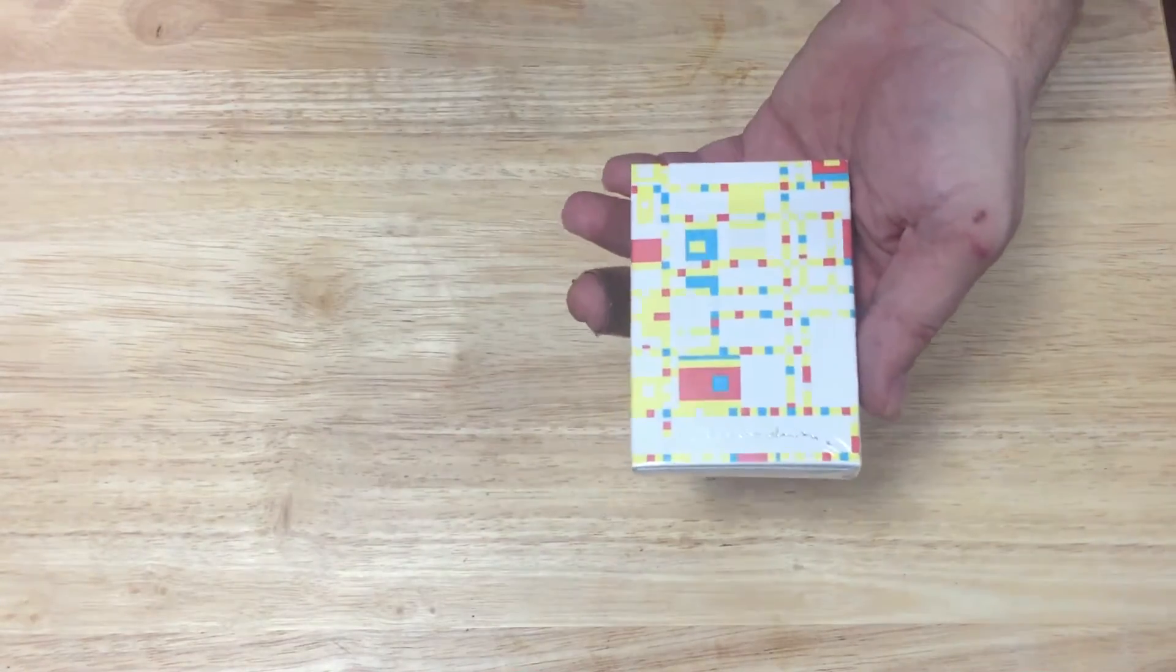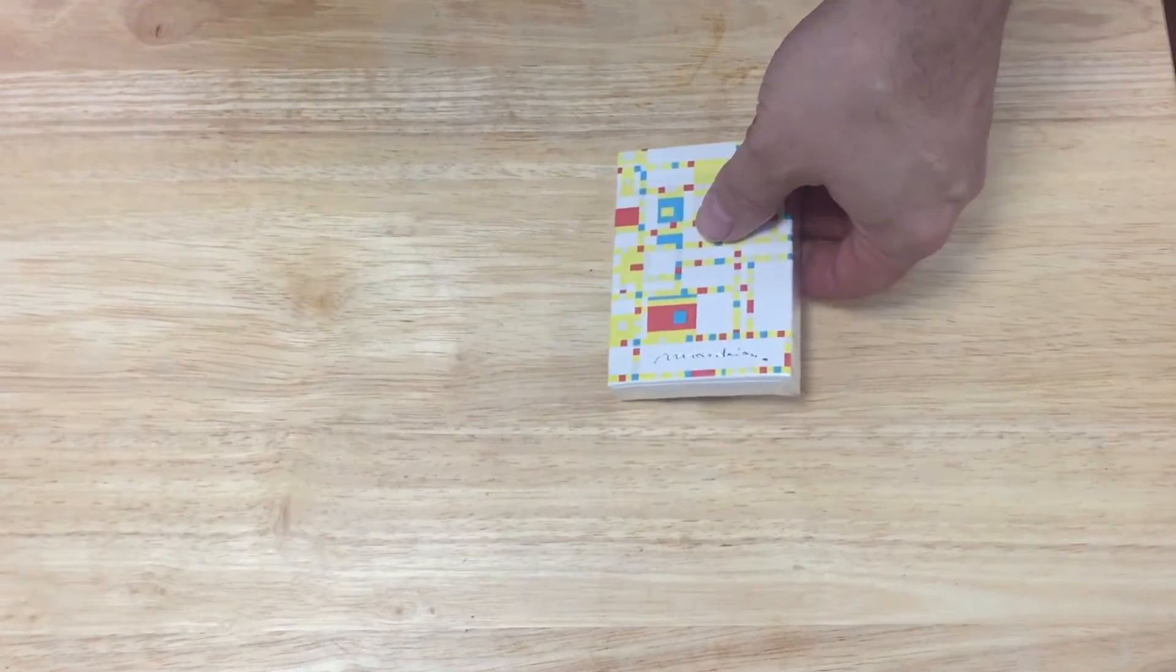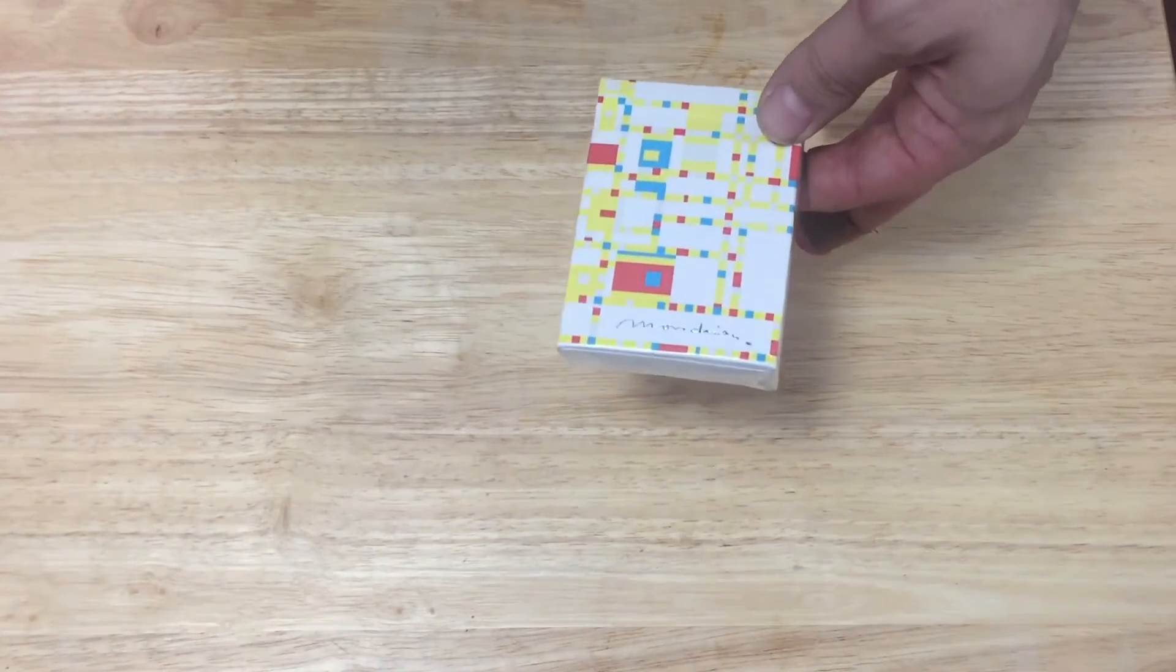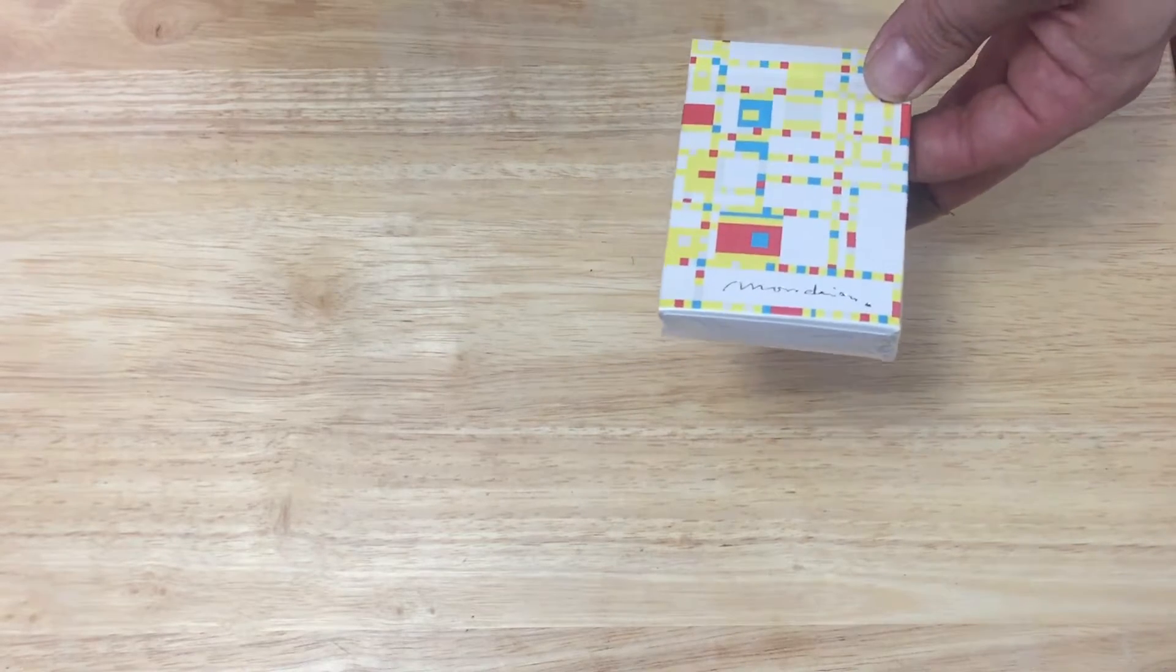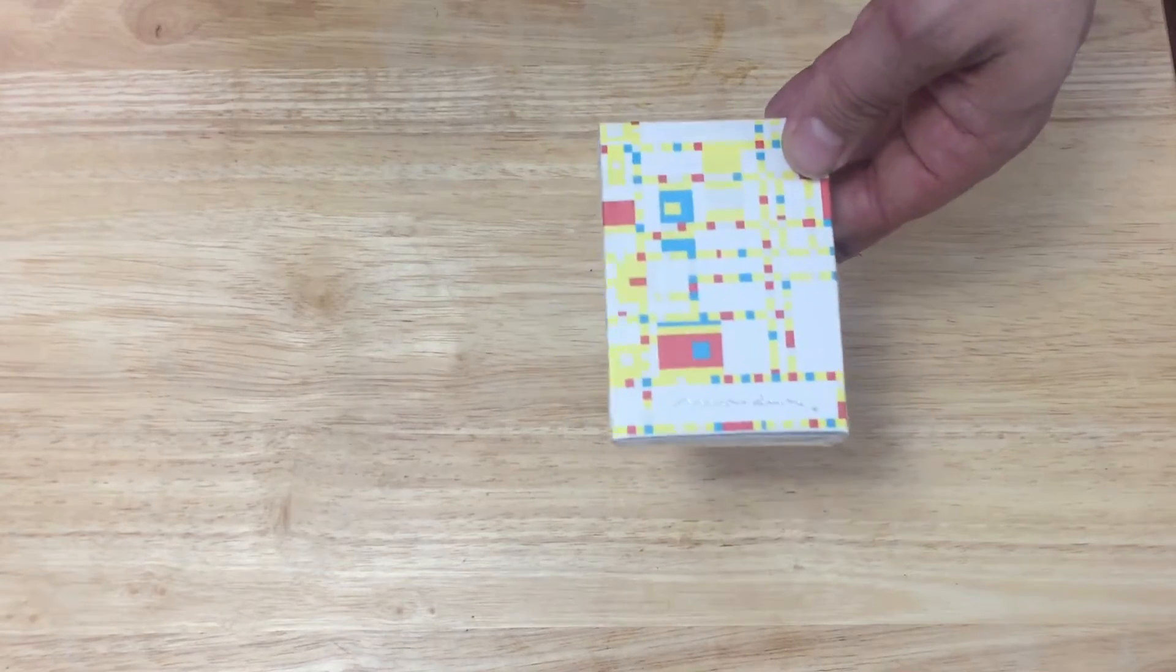In front of the box has that design. This is a design that is based on the Piet Mondrian art piece called the Broadway Boogie Woogie. That's the name Broadway for this deck.